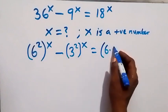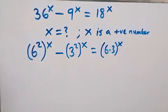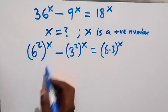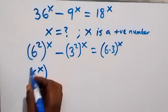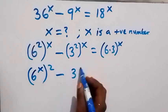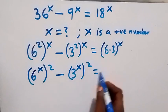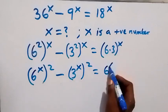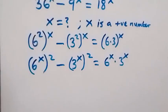We apply the law of indices — we can interchange the power and write it as 6 raised to power x, squared, then minus 3 raised to power x, squared, which equals 6 raised to power x times 3 raised to power x.